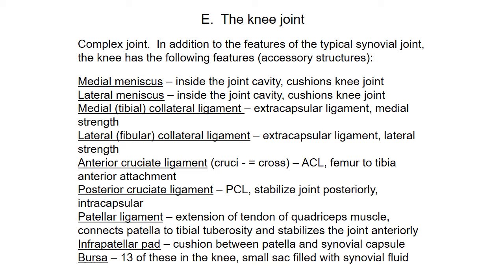Now we're going to talk about the knee joint. This is a very long lecture. The knee joint is a complex joint. Some books will say this is the most complex joint in the body. I'm not entirely in agreement with that statement, but it is a complex joint. I think the elbow is complex as well as the shoulder, and all those are places where you see injuries occur.